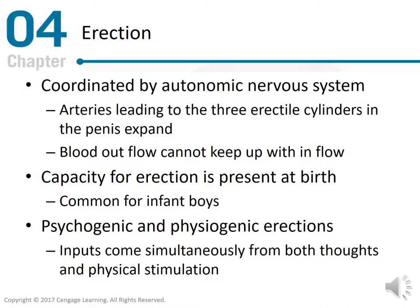Erection is coordinated by the autonomic nervous system. Arteries leading to the three erectile cylinders in the penis expand, and blood outflow cannot keep up with the inflow. The capacity for erection is present at birth and is common in infant boys. Psychogenic and physiogenic erections — inputs come simultaneously from both thoughts and physical stimulation. Questions to consider include: what physiological processes cause an erection, and how do psychological and physiological factors interact to influence erections?